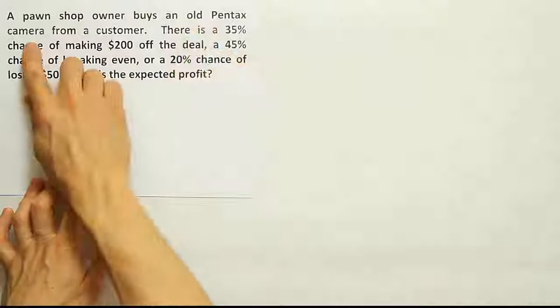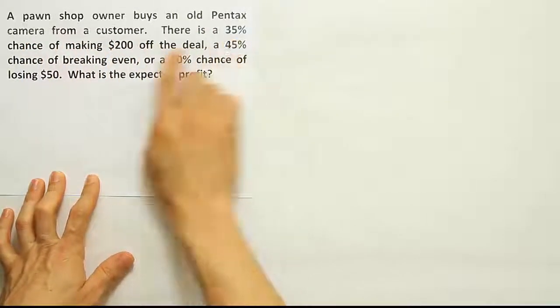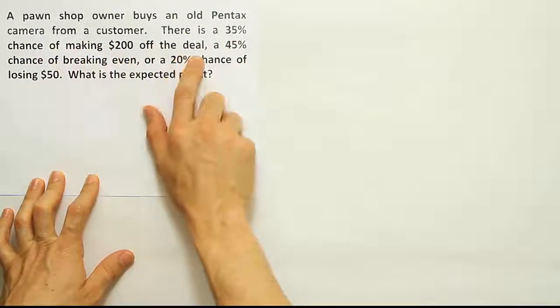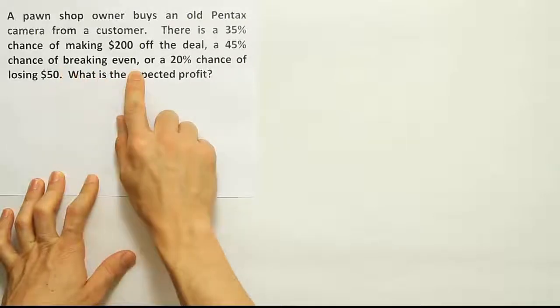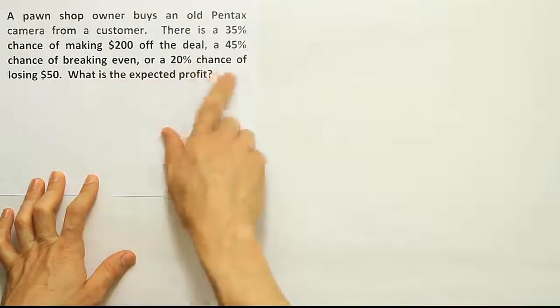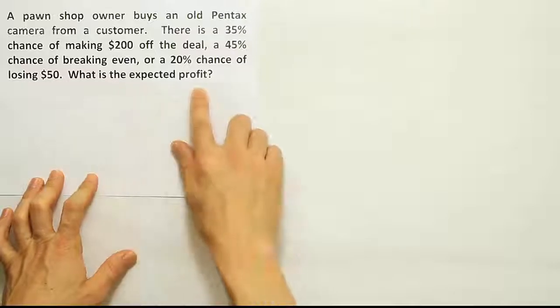A pawn shop owner buys an old Pentax camera from a customer. There's a 35% chance of making $200 off the deal, a 45% chance of breaking even, or a 20% chance of losing $50. What is the expected profit?